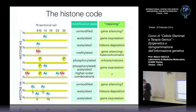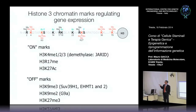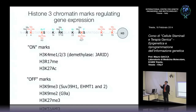Sull'istone H3: se la lisina in posizione 4 è metilata con 1, 2 o 3 gruppi metilici, il gene è trascritto. Se la lisina in posizione 27 è acetilata, il gene è trascritto. Viceversa, se la lisina in posizione 9 è metilata, il gene è represso. Se la lisina in posizione 27 è metilata, il gene è represso. C'è quindi un antagonismo fra acetilazione e metilazione su questa lisina 27.